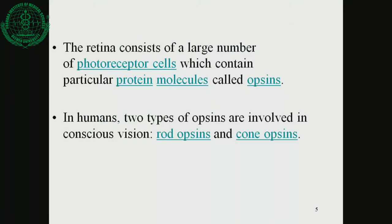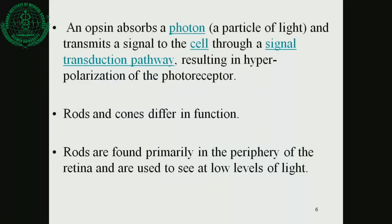The retina consists of a large number of photoreceptor cells which contain particular protein molecules called opsins. In humans, two types of opsins are involved in conscious vision: rod opsins and cone opsins. An opsin absorbs a photon and transmits a signal to the cell through a signal transduction pathway, resulting in hyperpolarization of the photoreceptor.